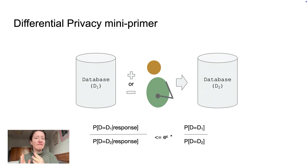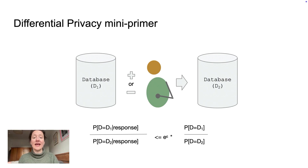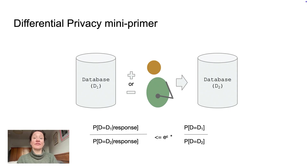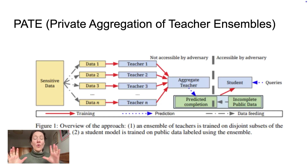If I can say: for every individual, I can guarantee that we can't figure out if they're in the data set or not — and yet we can still make analytics, make inferences, build machine learning models — and we end up with overall information that comes from many many people, not just one person, then this is both the promise of differential privacy and a really compelling way of saying we can guarantee individual privacy while still allowing us to do data work and draw conclusions from larger groups.